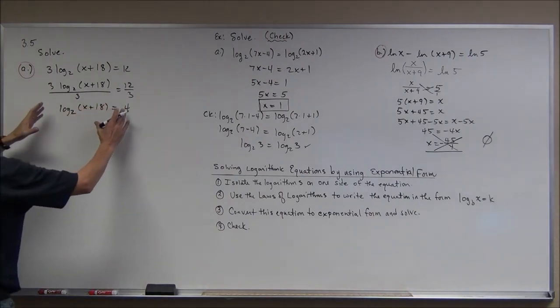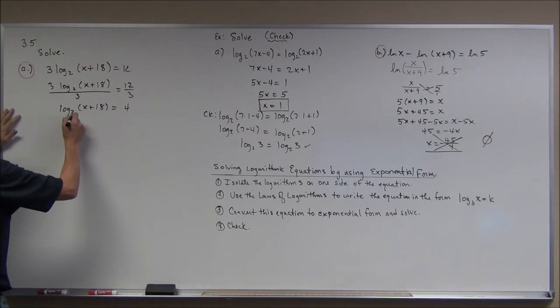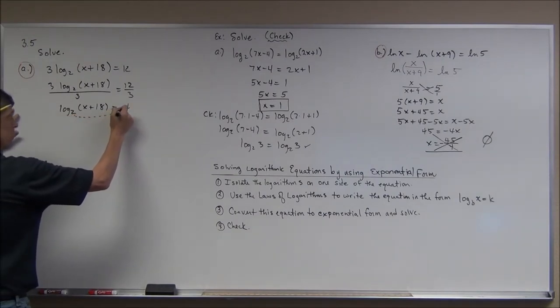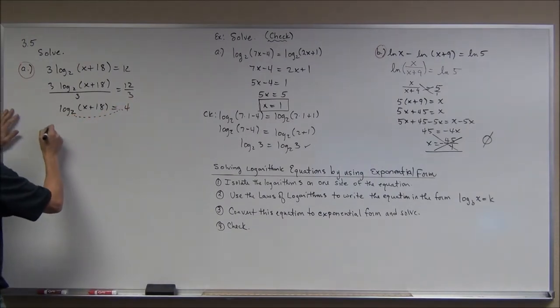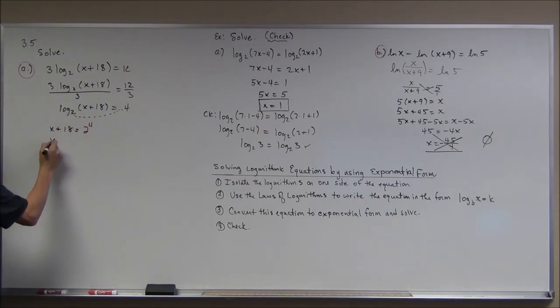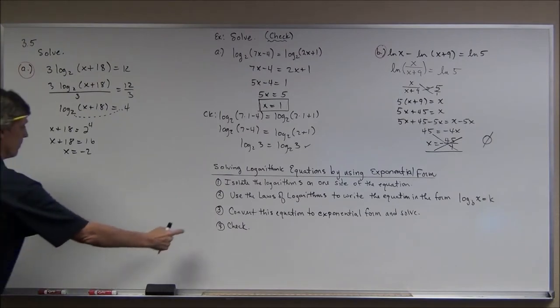So I am going to rewrite this into exponential form. Remember, you bring the base over and it nudges it right up. I get x plus 18 is equal to two to the fourth. I have x plus 18 is equal to 16. Subtract 18. I have x is negative two. Now again, check your work. Important.